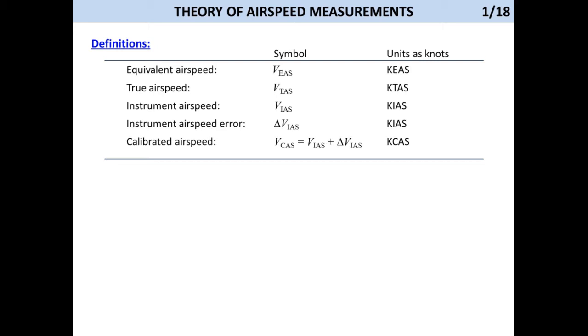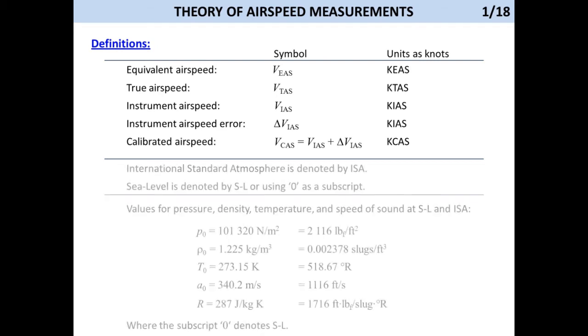Thus, the unit for the equivalent airspeed in knots is spelled K-E-A-S. I pronounce it K-E-A-S. Similarly, I pronounce the unit of knots for the true airspeed as K-T-A-S. I pronounce the indicated airspeed as K-I-A-S and the calibrated airspeed as K-C-A-S. Regardless of how this sounds, they should allow you to distinguish audibly between these airspeeds.